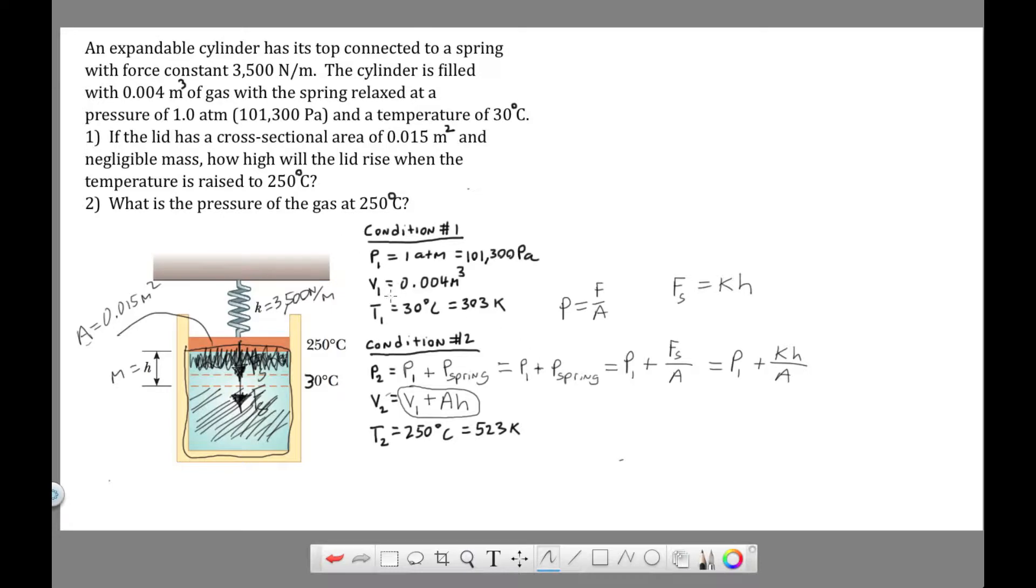In the first part we figured out that H, and we want to use an unrounded value here because rounding could really mess us up. So H came out to be 0.1043957 meters. That's our H. We're going to plug that in here. We know what K is and we know what A is. So solving for P2, P1 is 101,300 pascals, plus the spring constant which is 3,500 newtons per meter, H is 0.1043957, and the area of the piston is 0.015 meters squared.